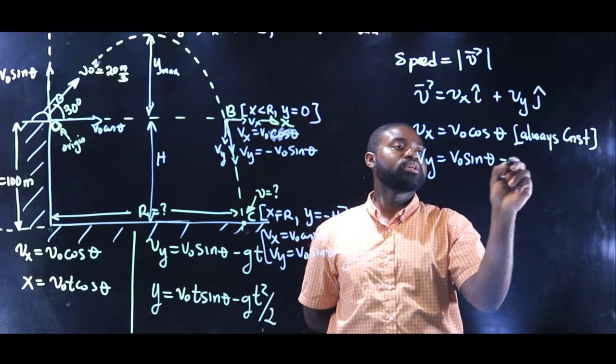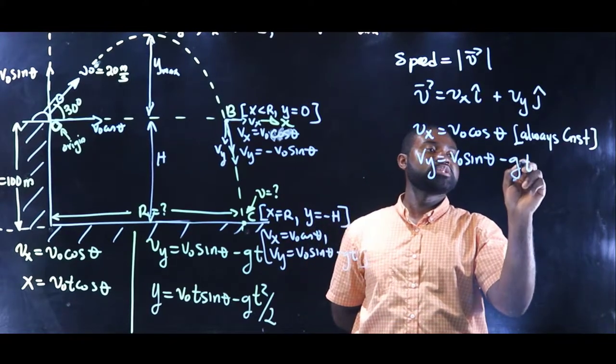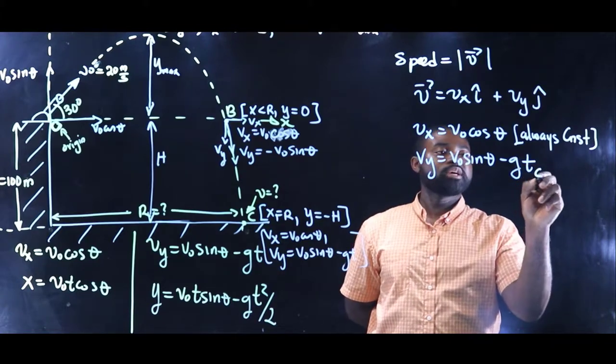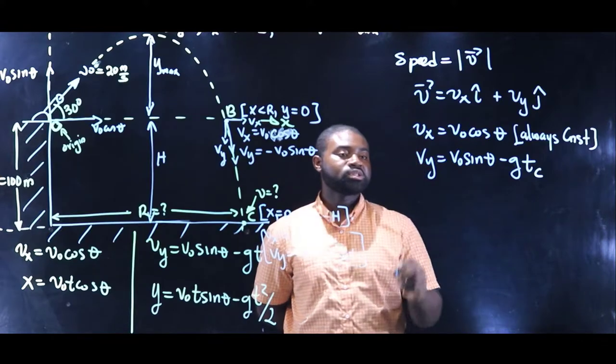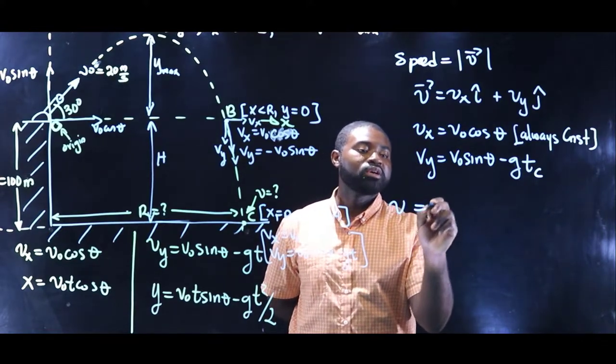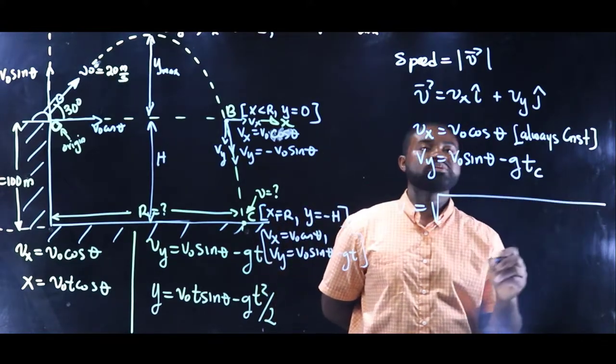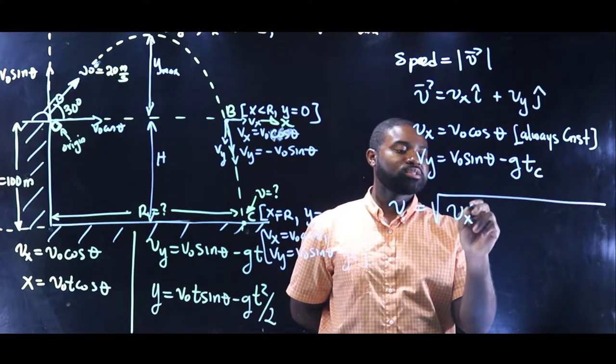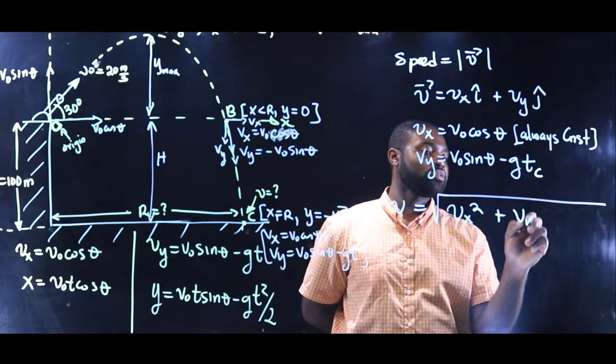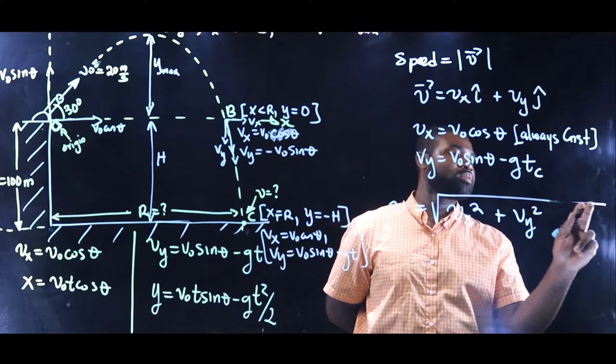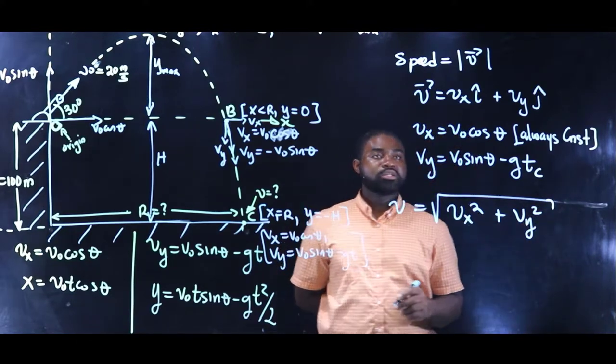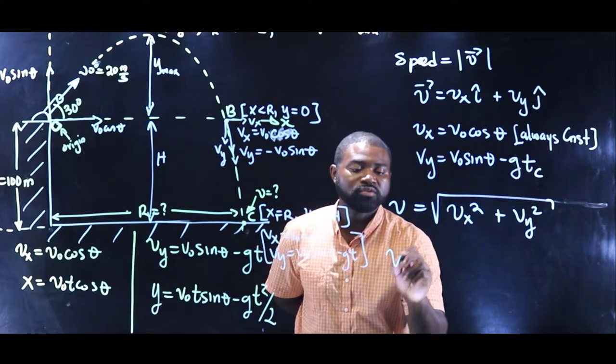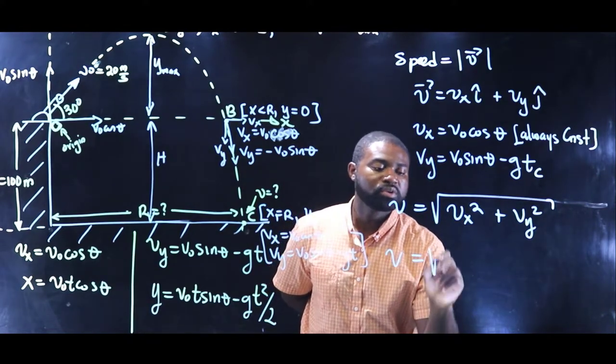I'm gonna put here TC, we know the value of TC. So the speed V is just the square root of Vx squared plus Vy squared.